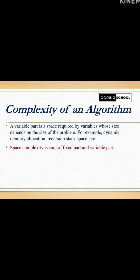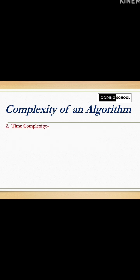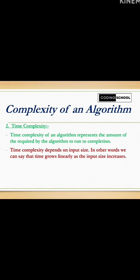Space complexity is sum of fixed part and variable part. Second is time complexity. Time complexity of an algorithm represents the amount of required time by the algorithm to run to completion. Time complexity depends on input size. In other words, we can say that time grows linearly as input size increases.